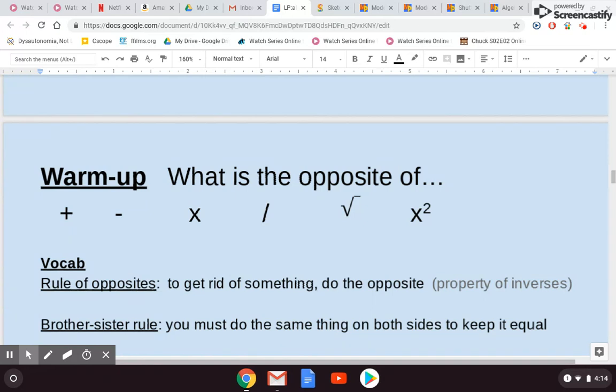Opposites are very important when we do one-step equations. The opposite of add is subtract. The opposite of subtract is add. The opposite of multiply is divide. The opposite of divide is multiply. The opposite of square root, and that's what this symbol is right here in case you've forgotten, is squared, and the opposite of squared is square root. We're going to be using those in our geometry unit, so I just wanted to go ahead and throw them in there.